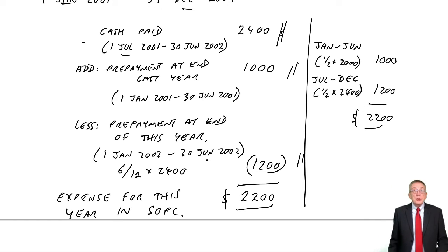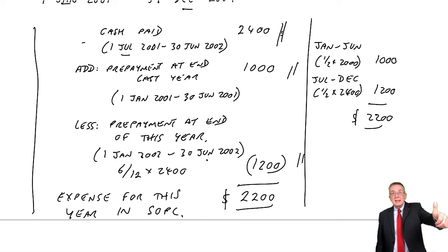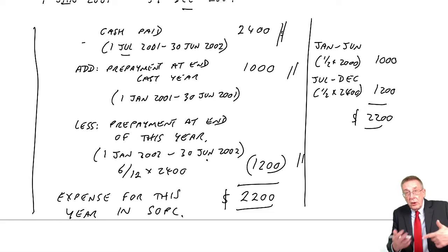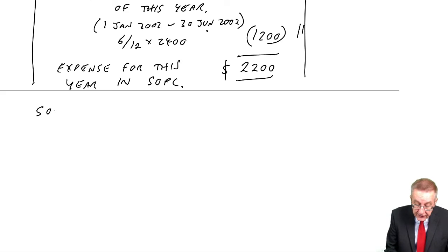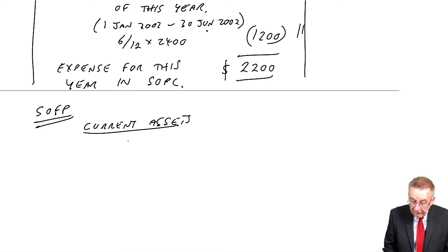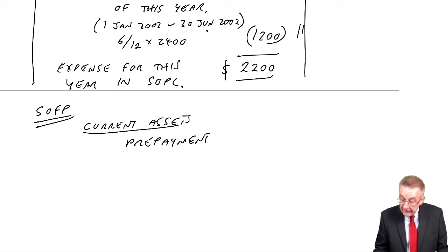Last year we paid $2,000 for 12 months to 30th June. Well, half of that, from January to June, is half of last year's bill. And from the rest of it, July to December, that's half of the bill we paid this year—again a total of $2,200. I'm not going to argue which is faster, although you will find when you come to practice questions that taking the cash we paid, adding on what was already paid last year, and subtracting the amount that's been prepaid this year is generally the quickest way. But that's your choice.